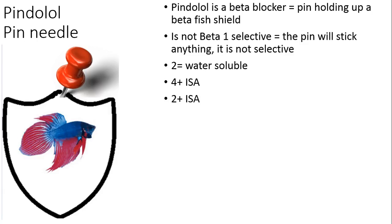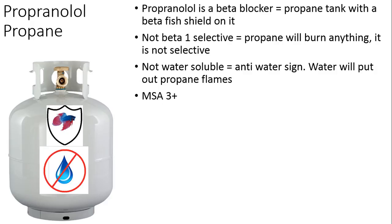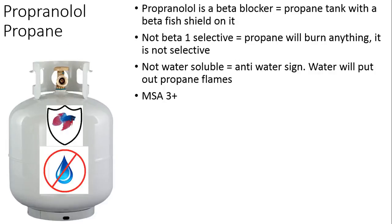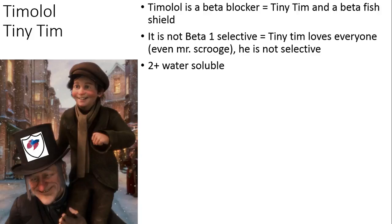Now we have propranolol — 'propan' kind of sounds like propane. So propranolol is a beta blocker: a propane tank with a beta fish shield on it. It is not beta-1 selective — you can burn anything with propane, it is not selective. It's also not water soluble at all — propranolol is the only one on the whole chart that is completely not water soluble. I even put a little water with a circle and X through it to show it's not water soluble. This is also MSA three-plus.